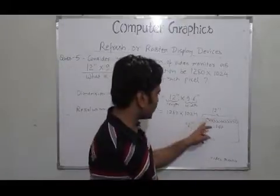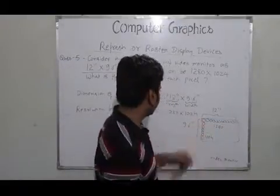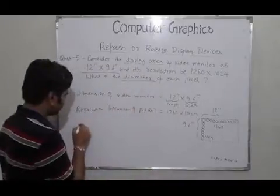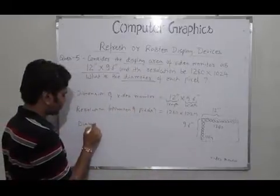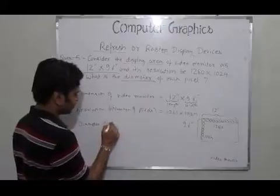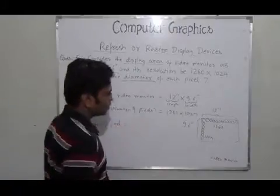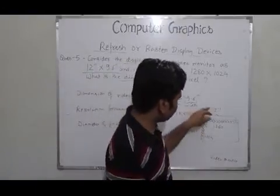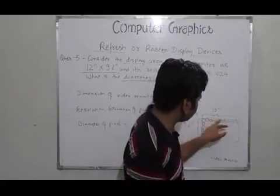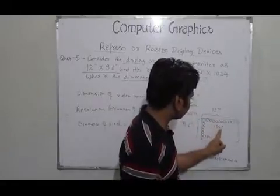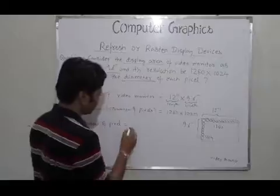We can determine the diameter of each pixel by simply dividing the entire length by 1280. It is easy, not difficult. We can divide the 12 centimeter length by 1280.